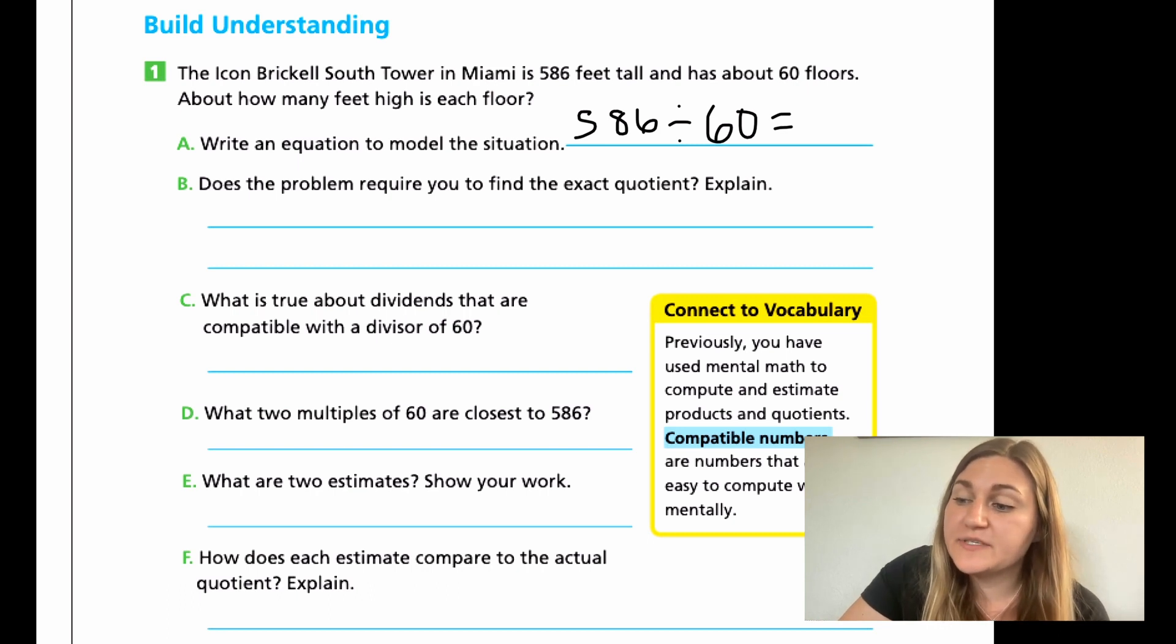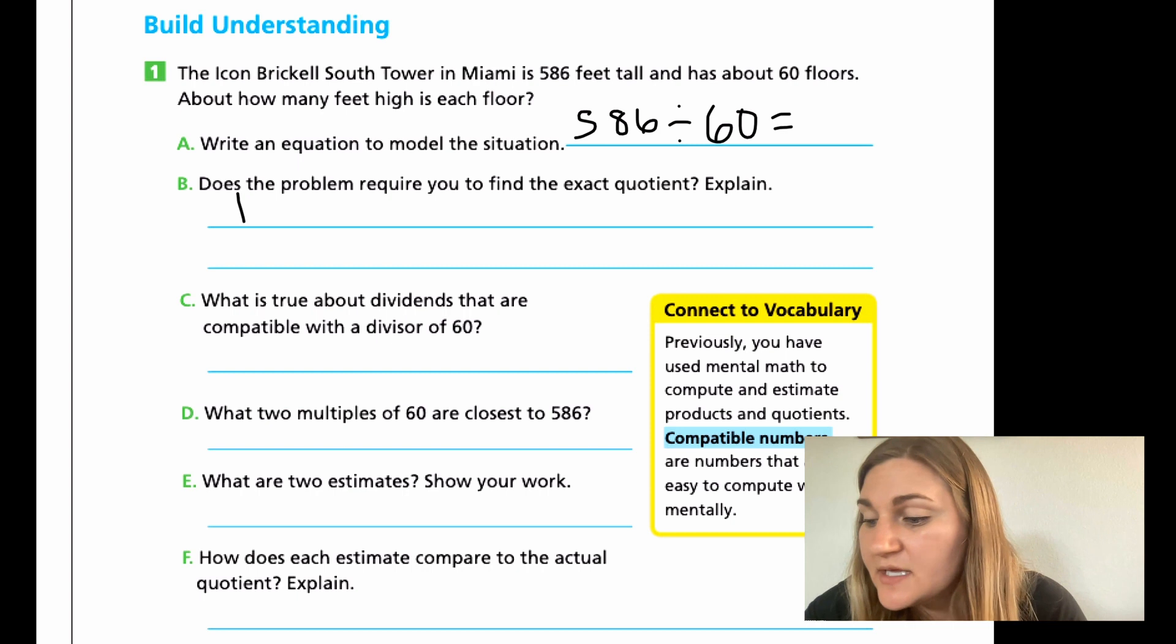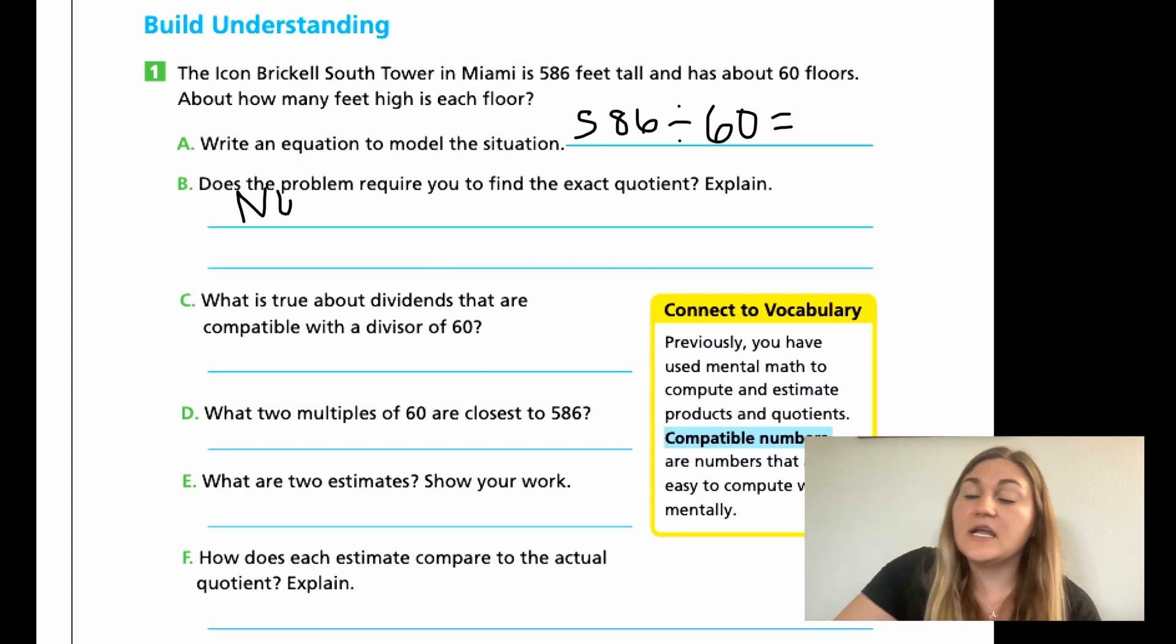B, does the problem require you to find the exact quotient? The answer is going to be no. And then you do need to explain in a complete sentence. So it would be, because I'm estimating, I don't need to find the exact quotient. And C, what is true about dividends that are compatible with a divisor of 60 is that they would be multiples of 60. If they're compatible, then they are multiples of 60, multiples of 6 with that 0 on the end.